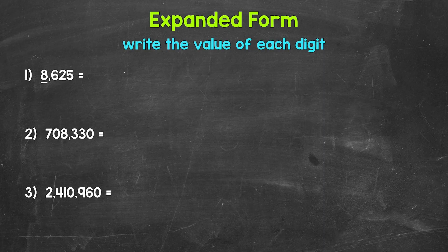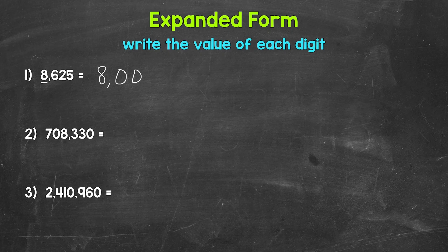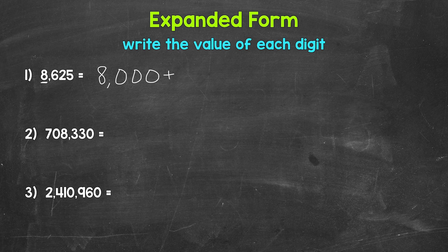Well, what's the value of this 8? What's it worth? Think about what place the 8 is in. Well, the 8 is in the thousands place, so it has a value of 8,000. So let's start our expanded form here. We put 8,000 plus, and we put an addition sign here because we want the sum of all of the values. We're adding the values of each digit when writing a number in expanded form, so we use addition in between. The sum of all of the values will equal the original number.